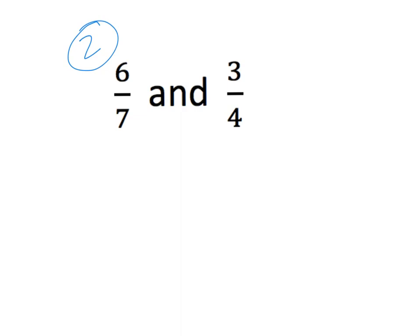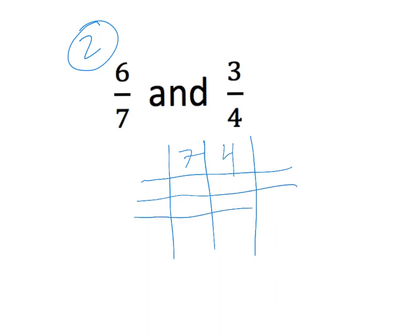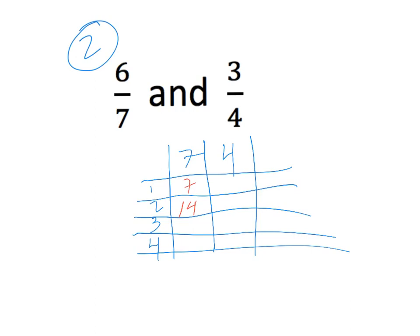We'll do the same thing here with seven and four. We'll extend it if we need to, so one, two, three, four. One times seven is seven, two times seven is fourteen, three times seven is twenty-one, and four times seven is twenty-eight. One times four is four.